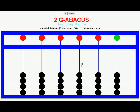100,000 is the maximum limit for this Abacus and there is no decimal representation functionality given in this version of Abacus.